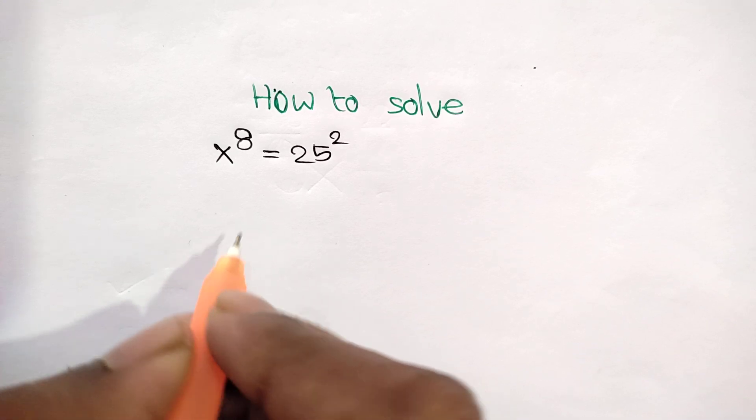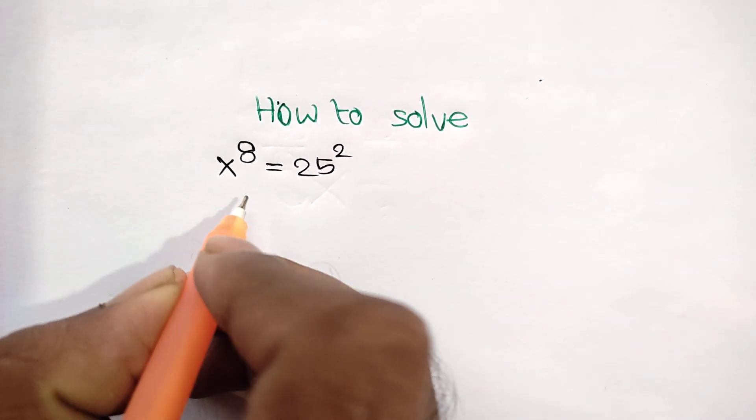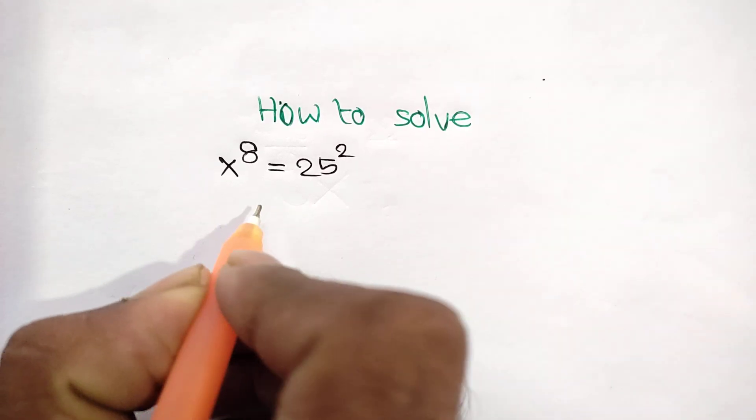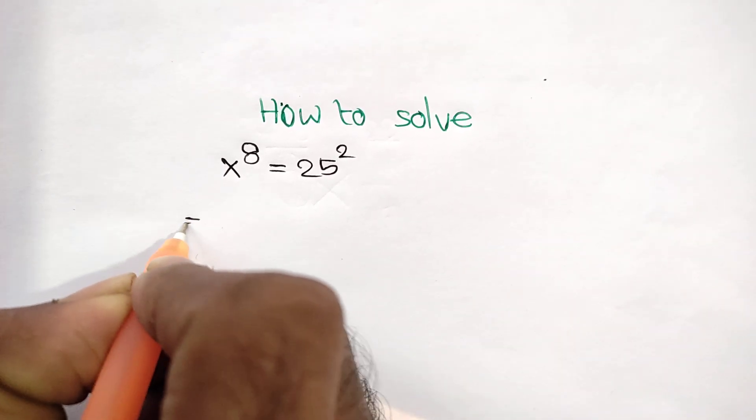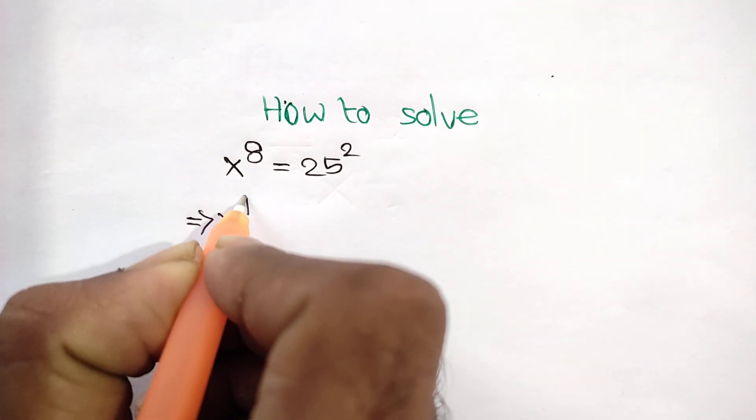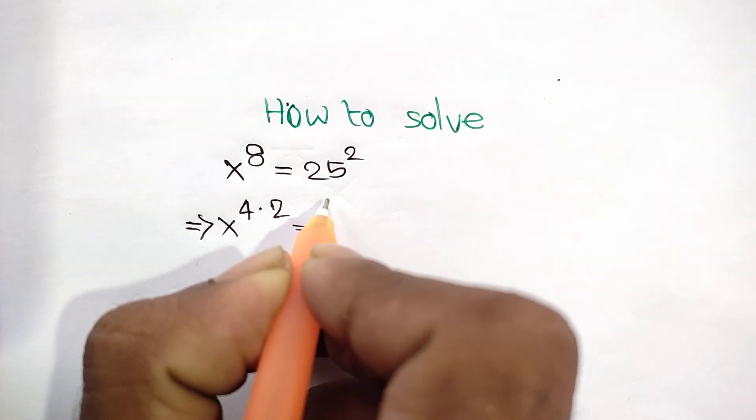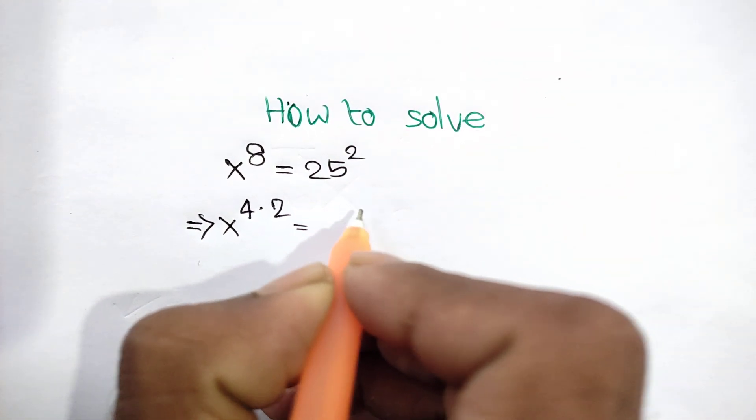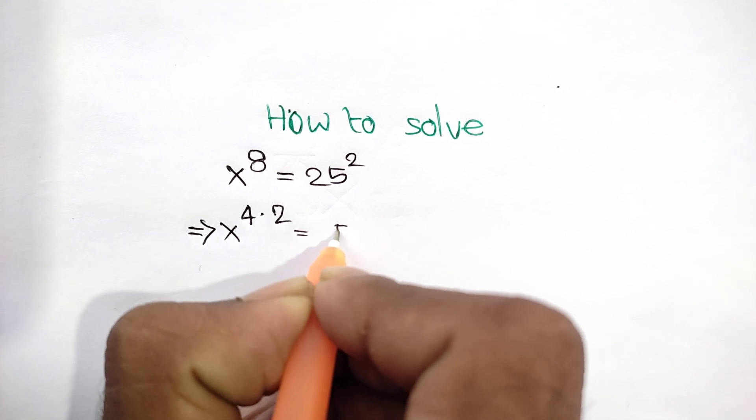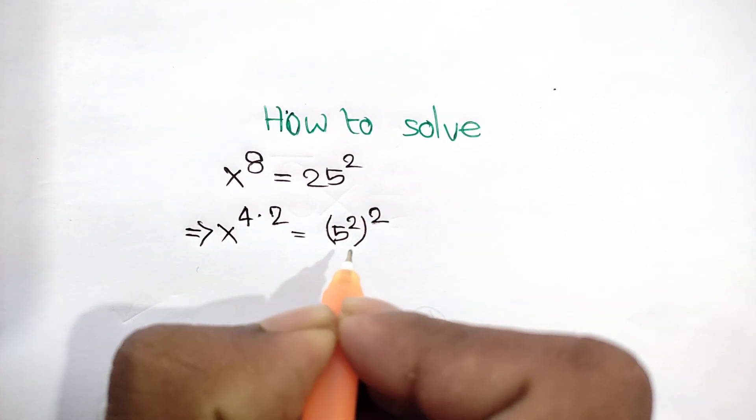This equation, what is the x value? Now we can write x to the power 4 times 2 equal to 25, the same as 5 square bracket square.